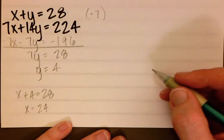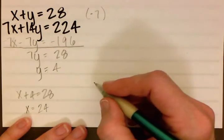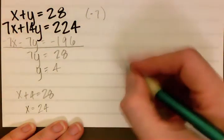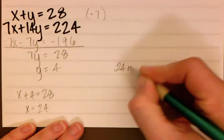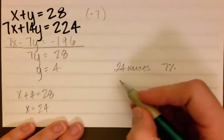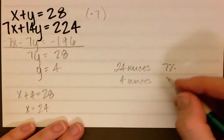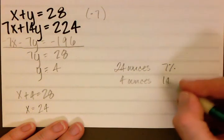So in order to get the 8% solution, 28 ounces of the 8% solution, we need 24 ounces of the 7% solution and we need 4 ounces of the 14% solution.